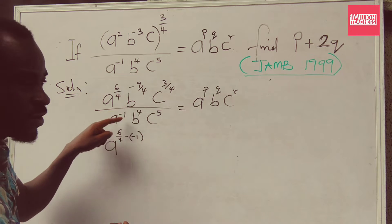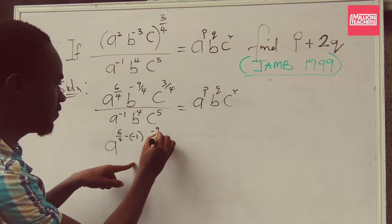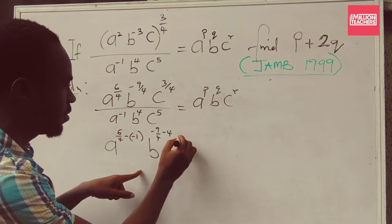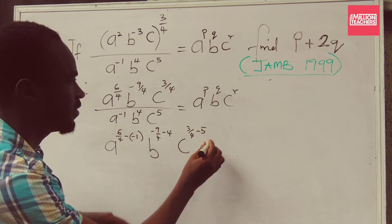The B and B, the same base. So applying the division law, that will give me minus 9 over 4 minus 4. So this C and this C. I have C to the power of 3 over 4 minus 5.